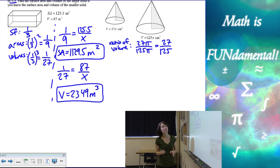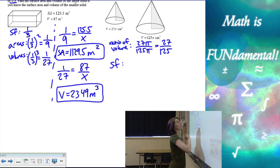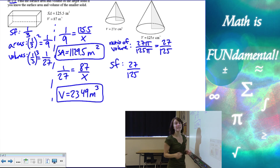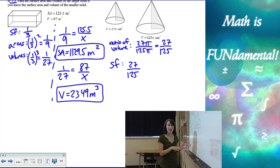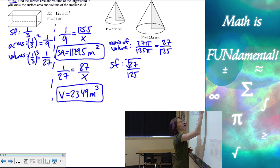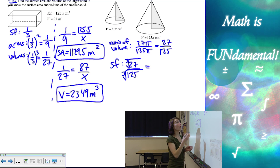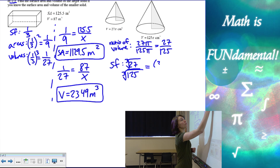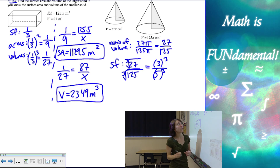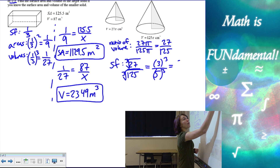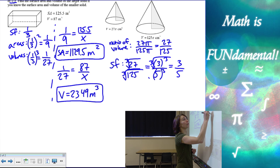Now, if I want to find the scale factor, I can take 27 and 125. Instead of going from the scale factor and cubing it to get to the volumes, we're going to cube root it. So we're going to take the cube root of 27 and the cube root of 125. You can think of it as 27 is three cubed and 125 is five cubed. So my scale factor is going to be three over five after I cube root it.